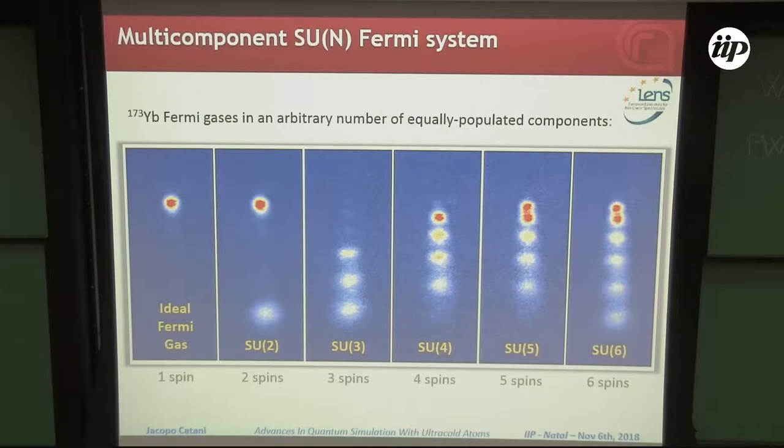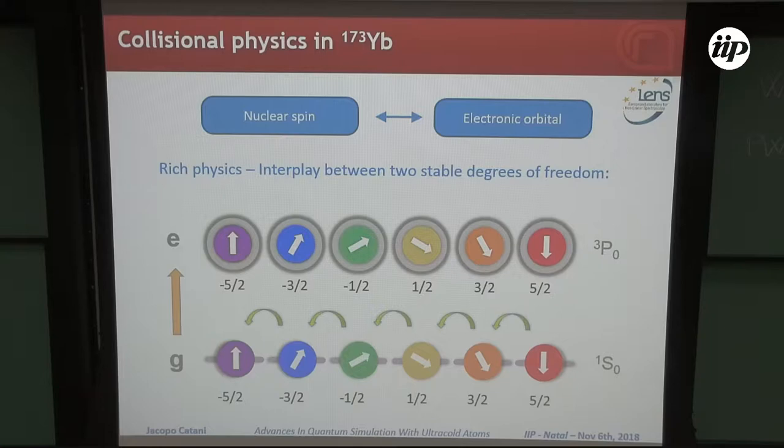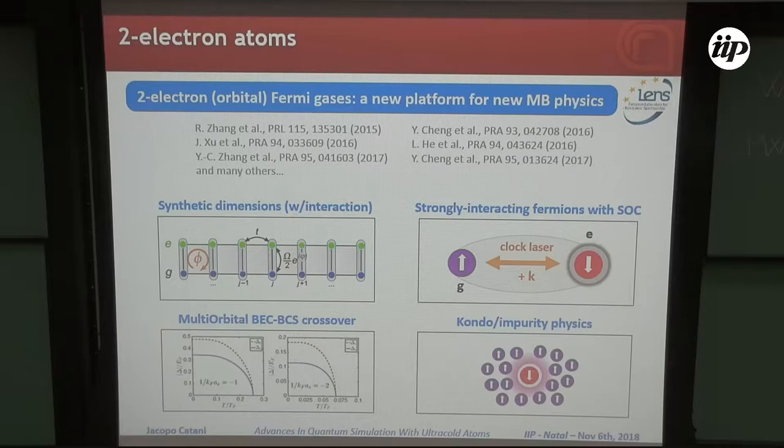The interplay between the nuclear spin and electronic orbital degrees of freedom gives you a very rich physical system in terms of collisional physics. You can have two spin-full levels, and you can play around with the composition in terms of spin and also in coupling between the ground state and the orbital level. That's the reason why in the last few years, a lot of attention has sparked around these kind of systems.